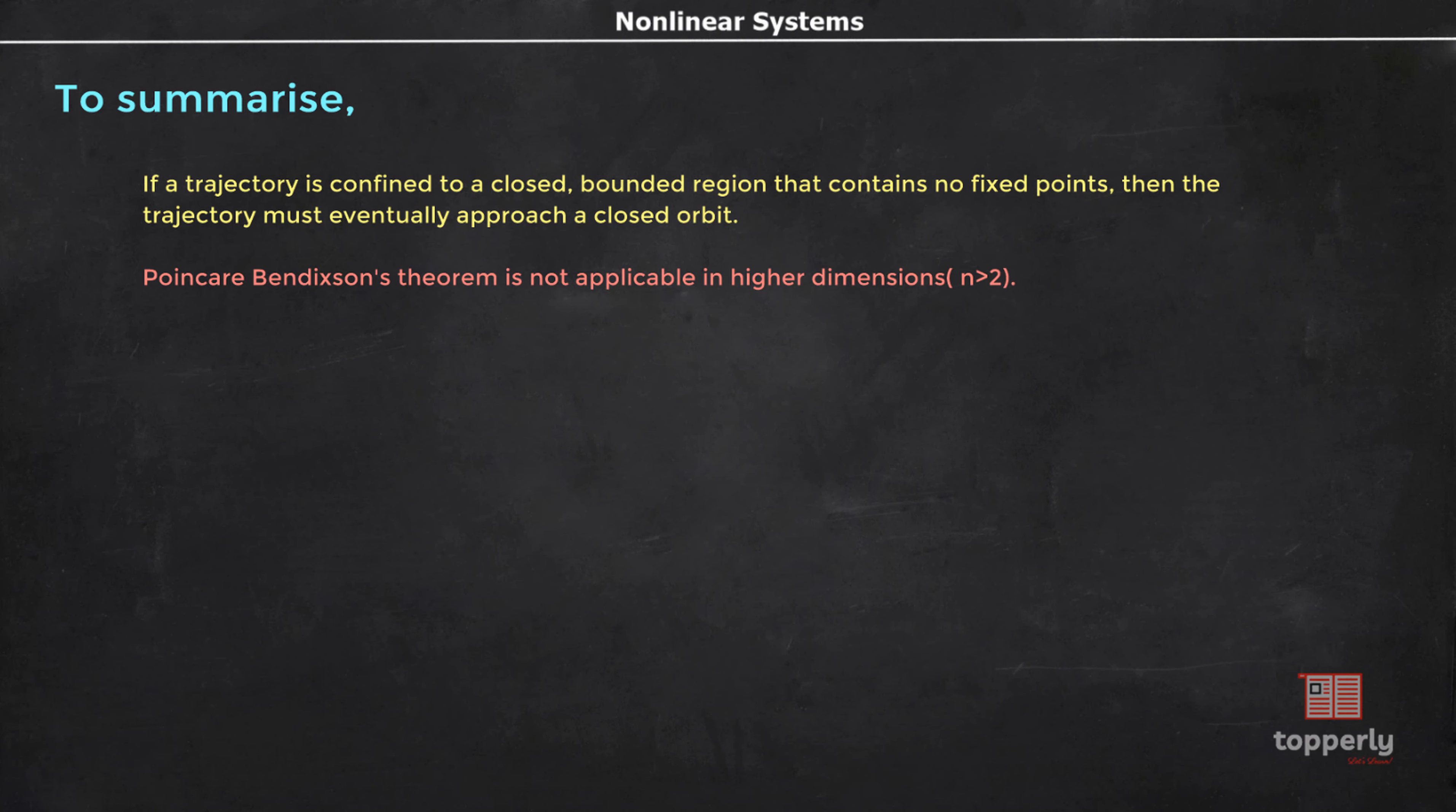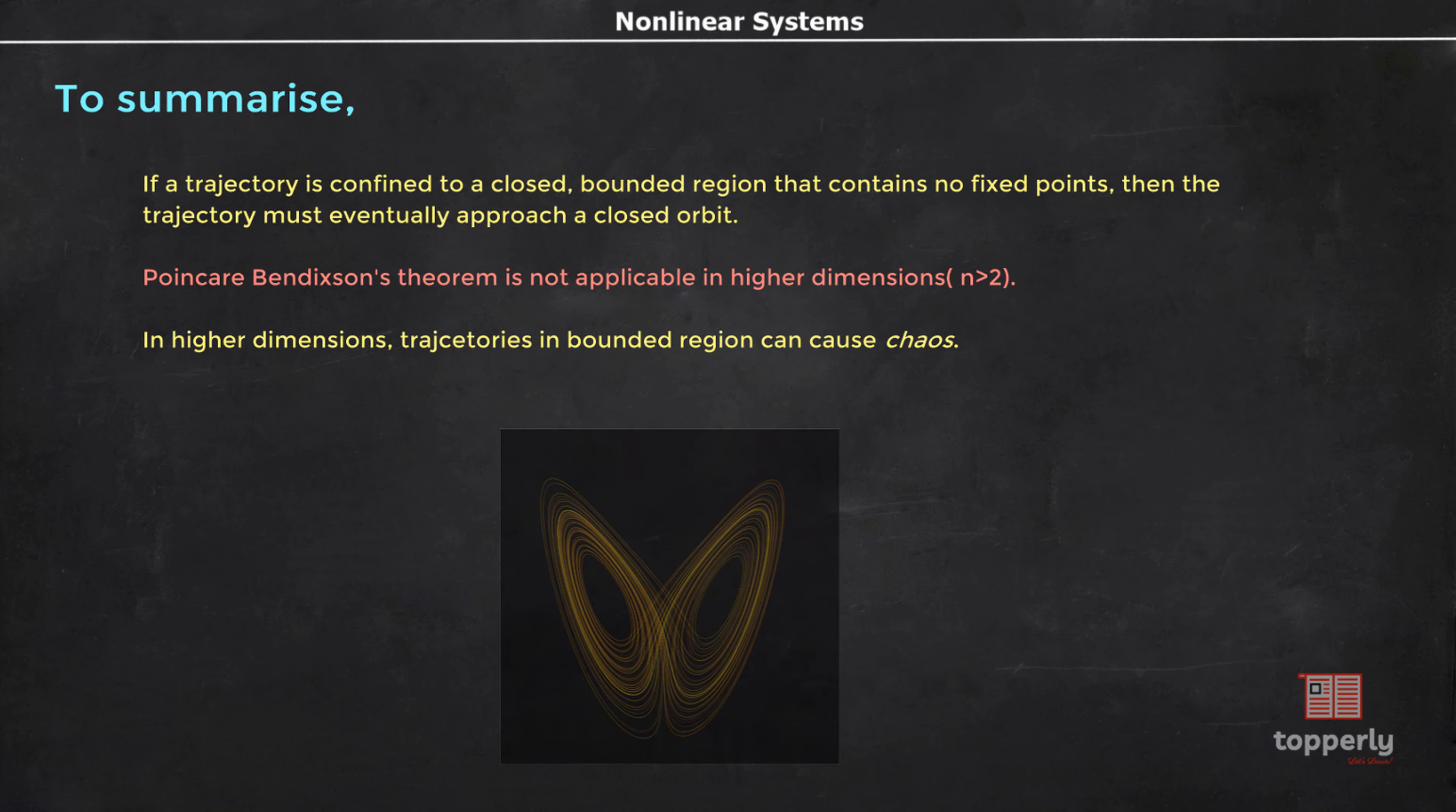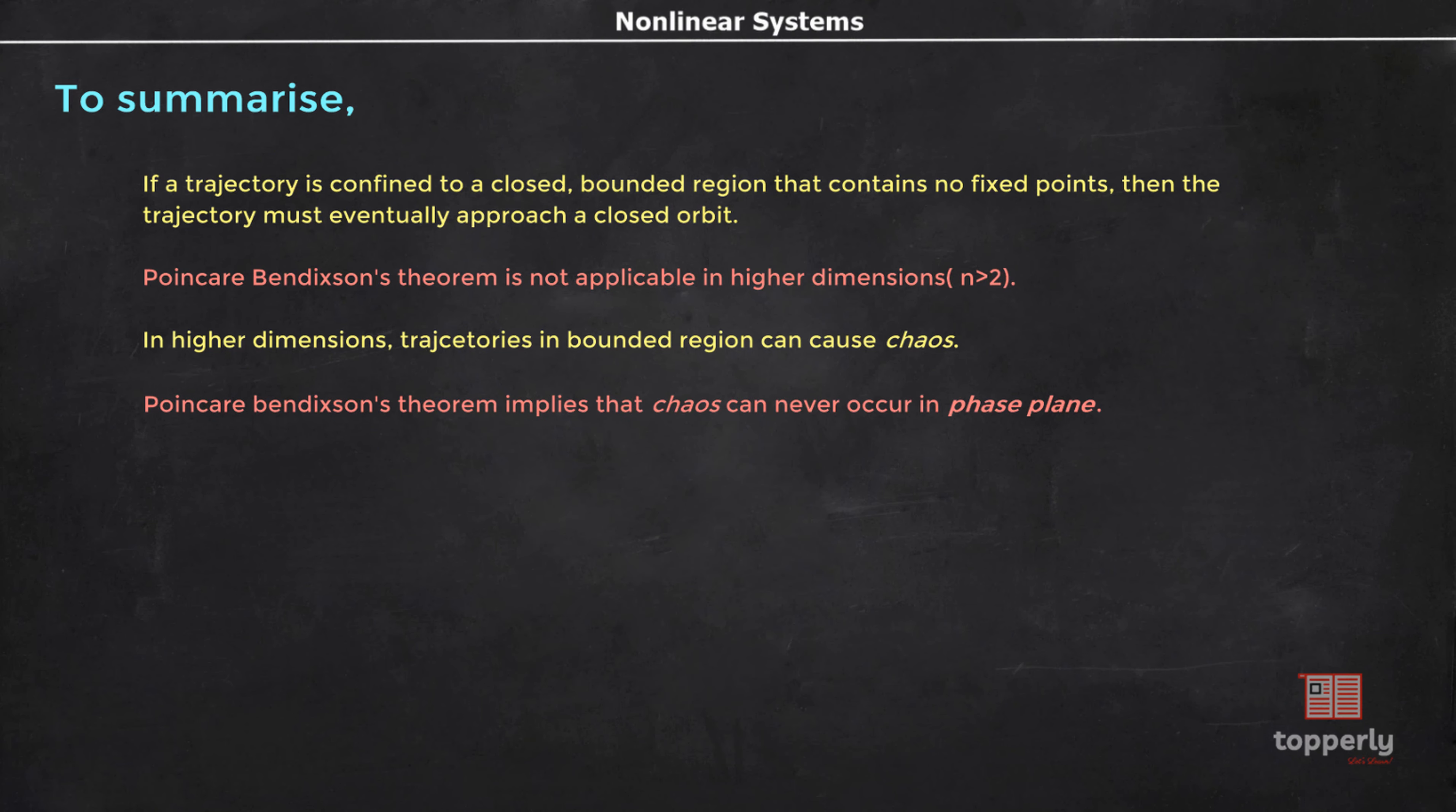In higher dimensional systems, the Poincaré-Bendixson theorem no longer applies. Instead, the trajectories may wander around forever in a bounded region without settling down to a fixed point or a closed orbit. In some cases, the trajectories are attracted to a complex geometrical object called a strange attractor where the motion is aperiodic and sensitive to tiny changes in the initial conditions. This sensitivity makes the motion unpredictable in the long run. This situation or phenomenon is called chaos. The famous butterfly effect we all have heard about is an example of chaos.